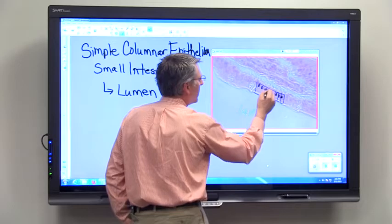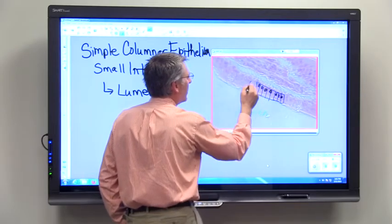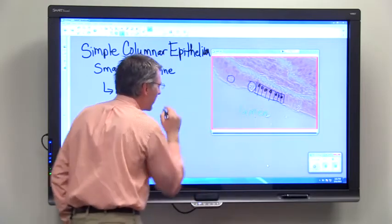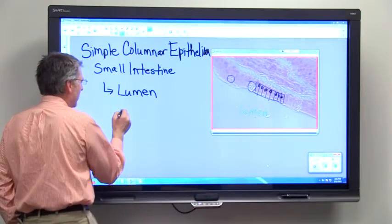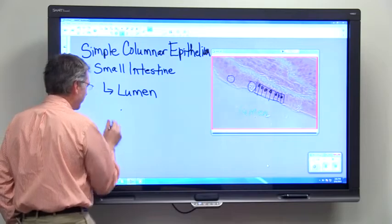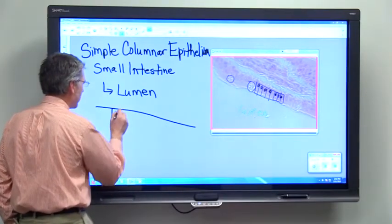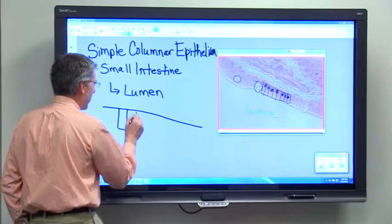We could separate these cells sort of like this. Here's a goblet cell that we looked at, and here's another goblet cell. So if we wanted to draw that tissue, it would look something like this, which is pretty much what we have over there.